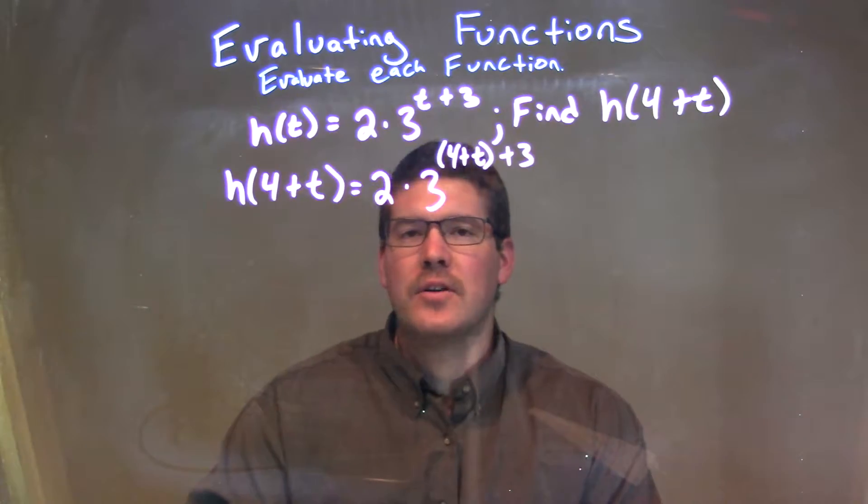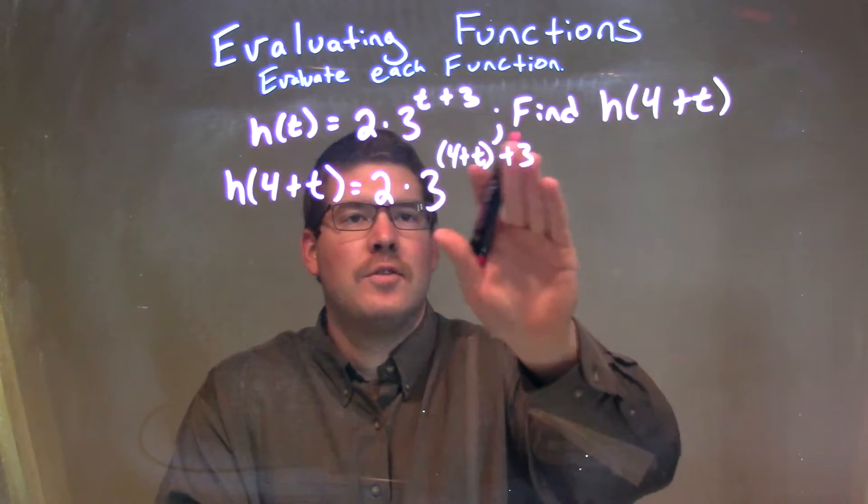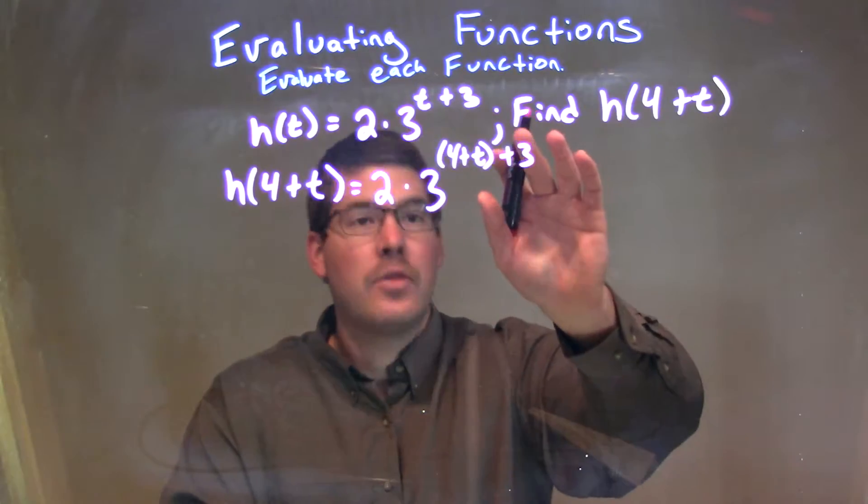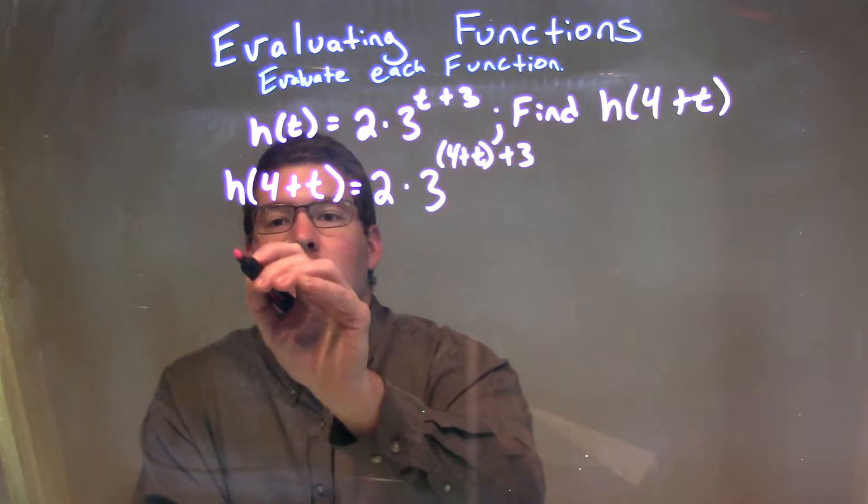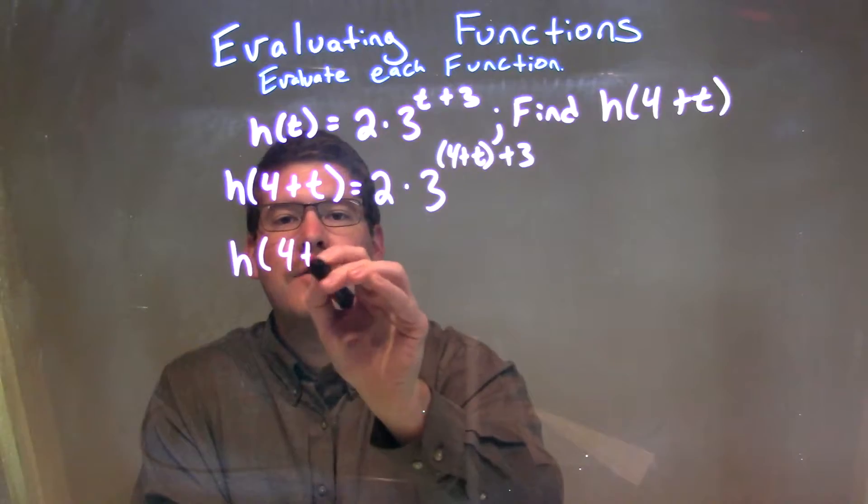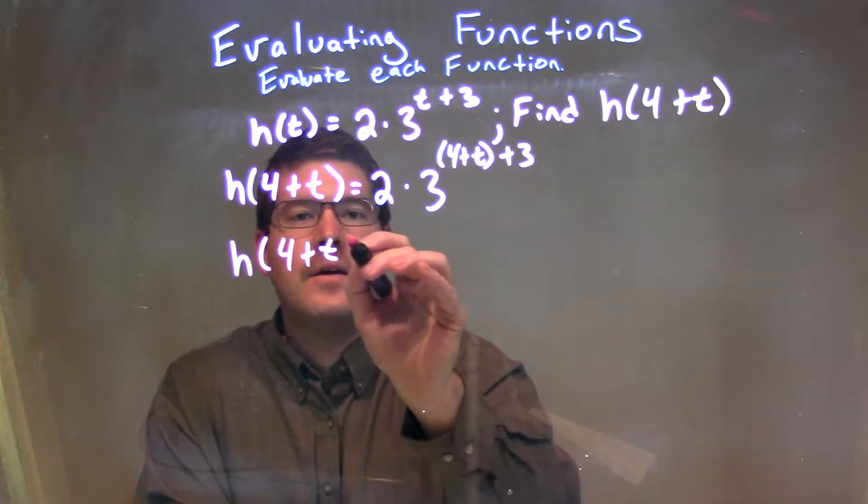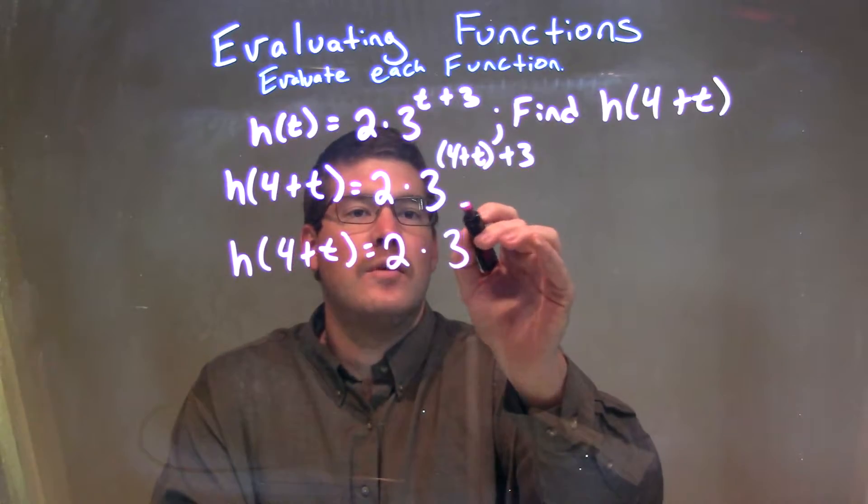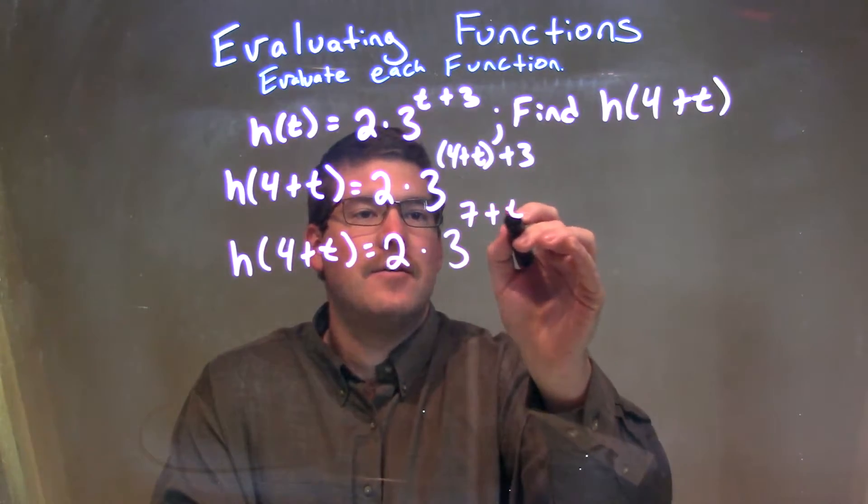Okay, well, this one's actually fairly simple. We have to deal with the exponent first, so let's simplify that. 4 plus t, I cannot combine together. But I can combine the 3 and the 4 together. So, we have h(4 + t) here is equal to 2 times 3 to the 7 plus t power, since 4 plus 3 is 7.